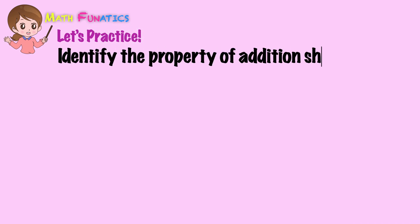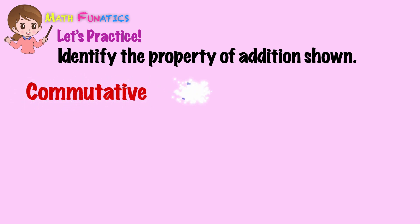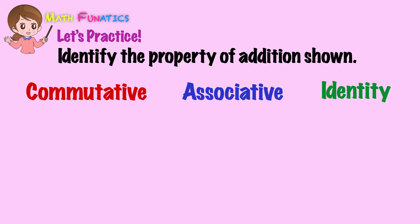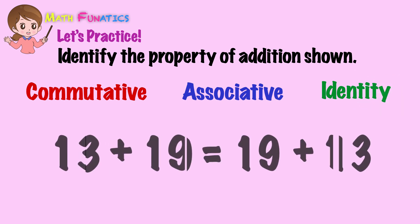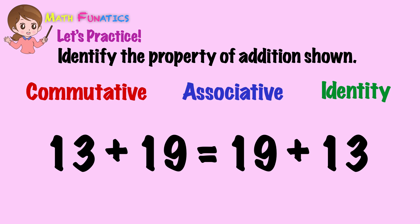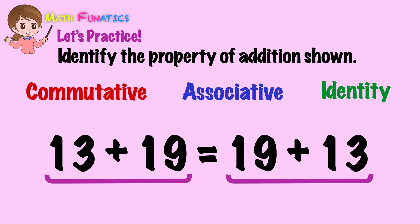Now let's practice what you've learned today. Identify the property of addition shown. Choose from commutative, associative, or identity property. The first question is 13 plus 19 equals 19 plus 13. Look at how the addends are arranged on both sides of the equation. You're right — commutative property is the answer.